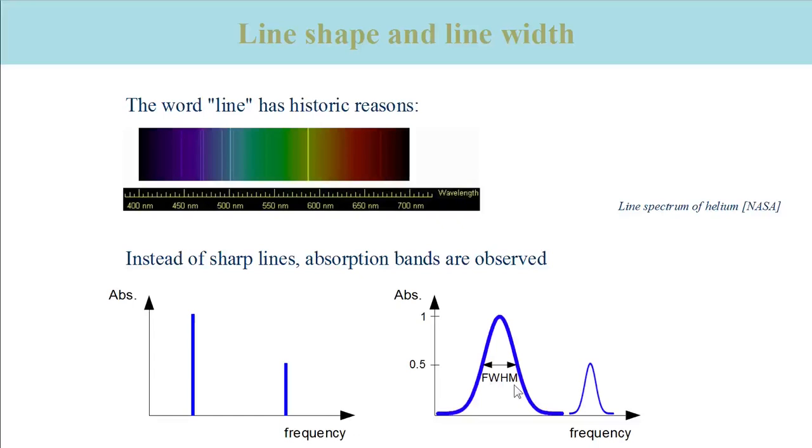We will discuss first the shape of absorption bands and then the width. Emission experiments produce also spectra with bands that are associated with the shape and the width. Therefore, the following discussion also holds for emission spectra.